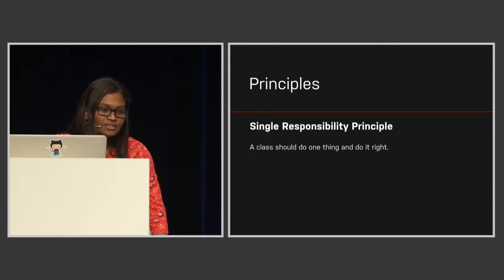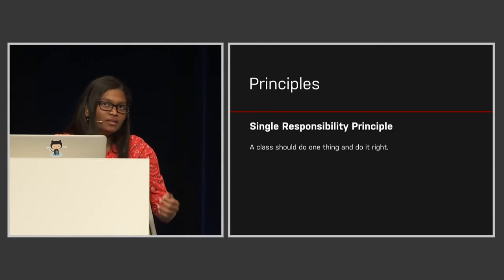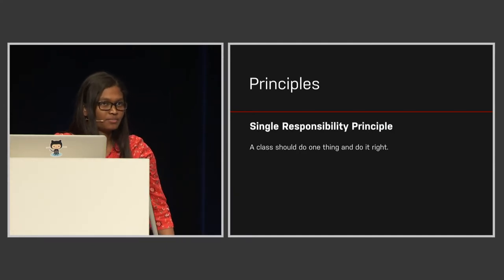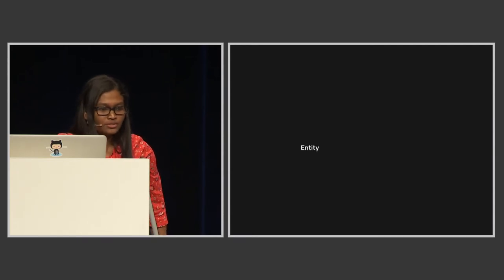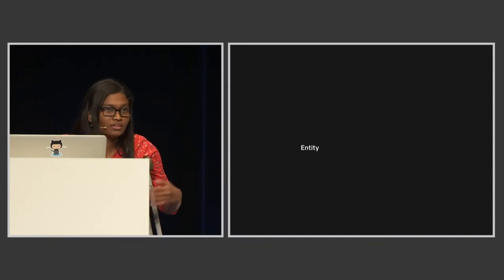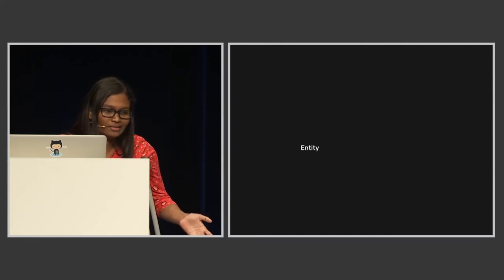First, we'll see the single responsibility principle. As the name suggests, a class should do one thing, and it should do it right. Therefore, in this architecture, we have various modules which have clearly defined responsibilities. First, we have entity. Entity represents a business object. For example, if we are making an app for a restaurant list, the restaurant will be our entity.